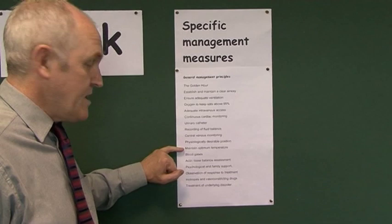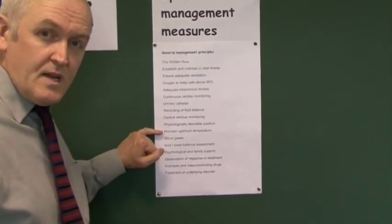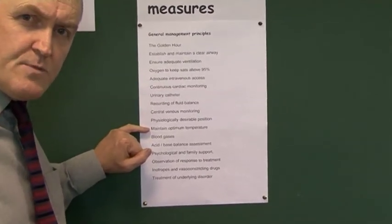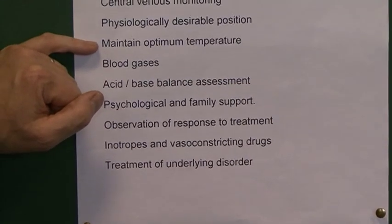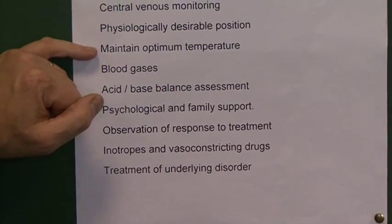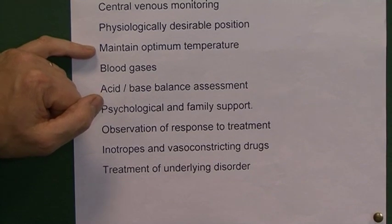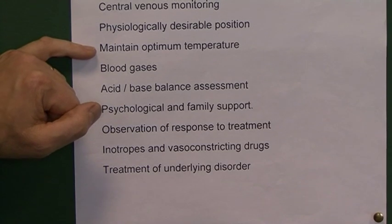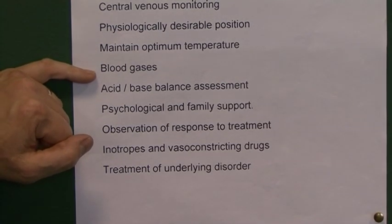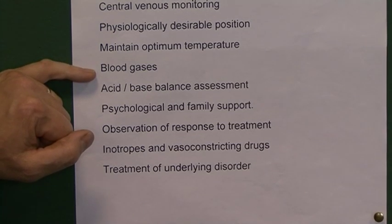We need to maintain optimum temperature — we don't want these patients to become hypothermic, especially if the patient is bleeding, because in a hypothermic patient the blood will not clot properly. We need to maintain an adequate normal body temperature. Blood gases can be useful: they will tell us if there is a low PO2, a low partial pressure of oxygen.